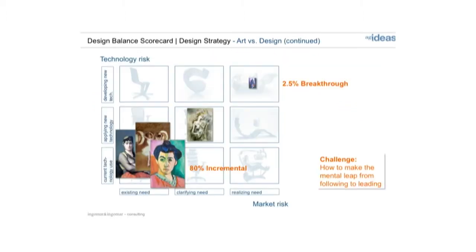If you put that into your matrix of market and technology risk, you can see why. The 80% are all down in incremental, with abstract art moving up, and digital virtual art and virtual art environments further ahead still. Whenever you do breakthrough innovation, adoption takes a long time — always longer than you expect. Most products are down in incremental, and the chances of success up in breakthrough are very small. That's why you need design to help develop your products, prototype them, and reduce your risk on the axis of market risk, so you overcome that problem.